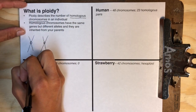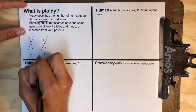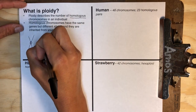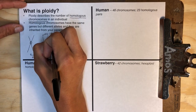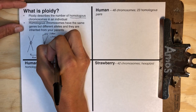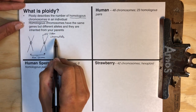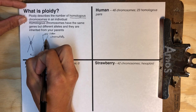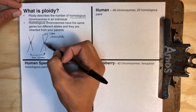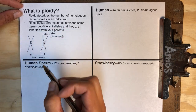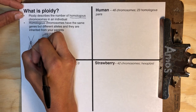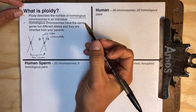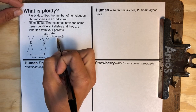Homologous chromosomes are not the same thing as sister chromatids. These two chromosomes, for example, could potentially be homologous chromosomes, whereas these two portions are what we call sister chromatids. The difference is that sister chromatids are exactly the same — every single gene on one side, you're going to find an exact copy on the other side. This is basically like a textbook and a Xerox copy of that textbook, so it's got every single allele — if there's a dominant allele here, you're going to find that exact same dominant allele on the other side.